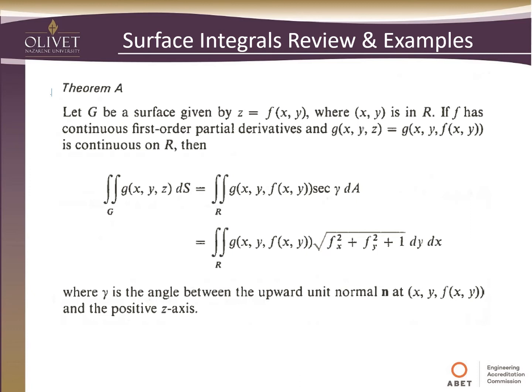So just as before, I did want to recall a quick theorem from calculus. And again, this is another transformation of variables theorem. So if we have a surface G given by z equals F of (x, y), where (x, y) are in R, if F has a continuous first order partial derivative and G(x, y, z) is equal to G(x, y, F(x, y)) and it's continuous on R.